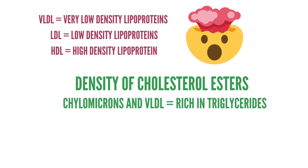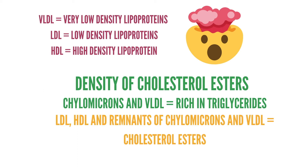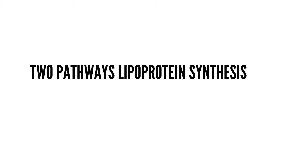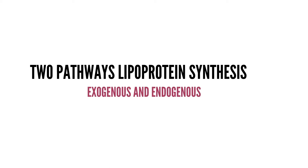The inner core of chylomicrons and VLDL is rich in triglycerides, while that of LDL, HDL, and remnants of chylomicrons and VLDL — also known as intermediate density lipoproteins — is rich in cholesterol esters. The apoproteins in the outer shell differ among the various lipoproteins and serve important functions such as binding lipoproteins to their receptors and activating enzymes involved in metabolism. There are two pathways of lipoprotein synthesis: exogenous and endogenous.